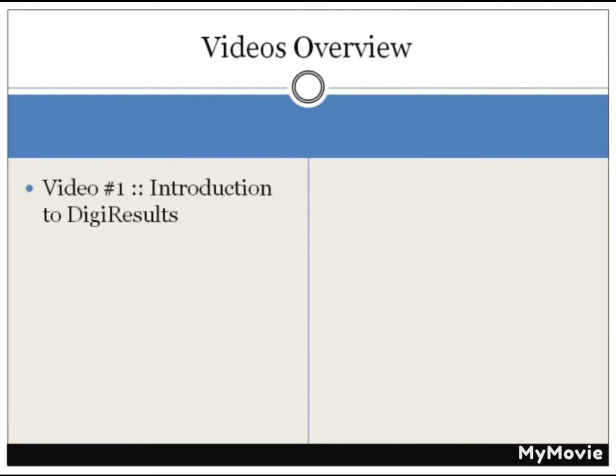The videos overview: video one is this specific video. Video two is the product vendor checklist — I'm going to make sure that you have everything in hand before you actually set up the DigiResults product. It's actually very easy to set up a DigiResults product as long as you have all the pages and everything, like the price points, titles, descriptions, and so forth.